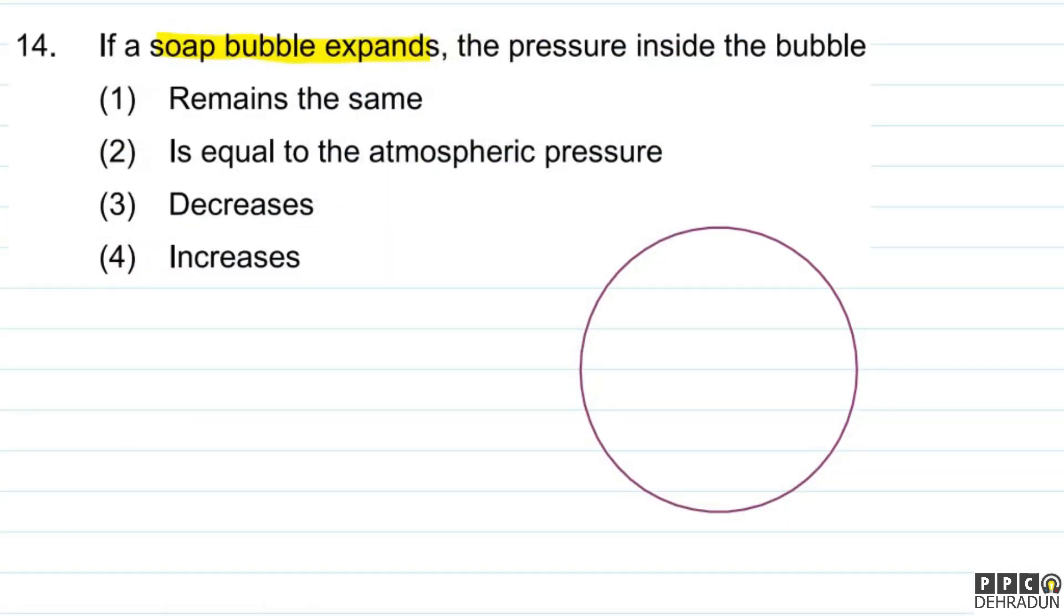We know that if outside pressure is P0, then inside pressure of a soap bubble is P0 plus 4S by R. Clear? Here S is surface tension and R is radius.